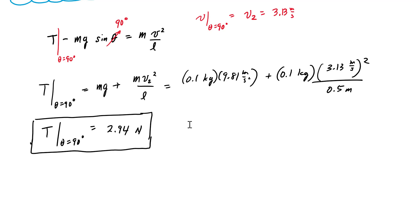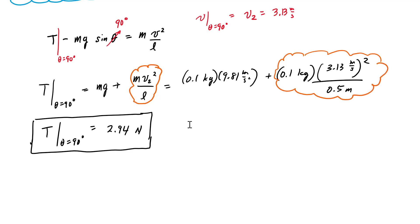Notice that the term M-V squared over rho is the additional force due to the dynamics of the problem. In a static condition at theta equals 90, it would just be M-g. Hopefully that was a helpful introductory example. Let me know if you have any questions. Take it easy — Structure Free.